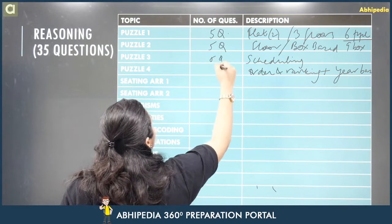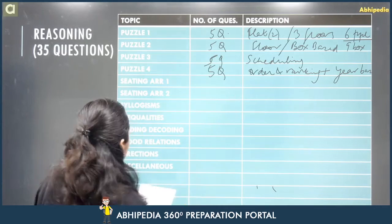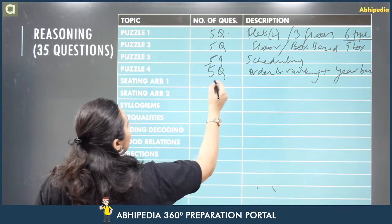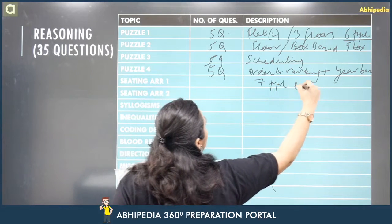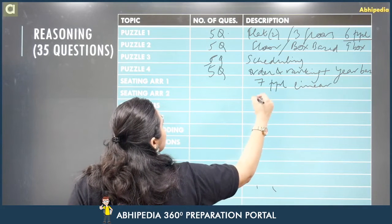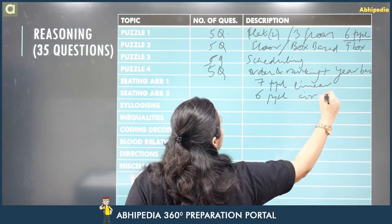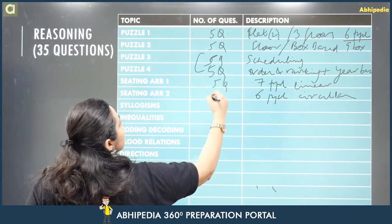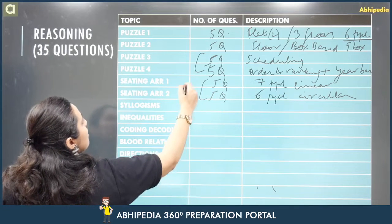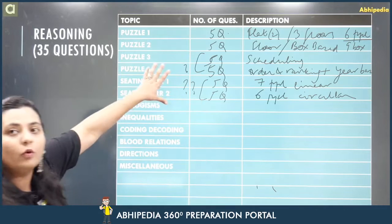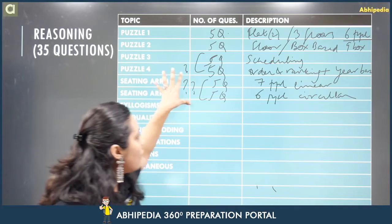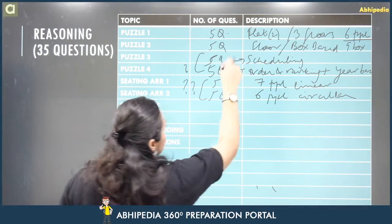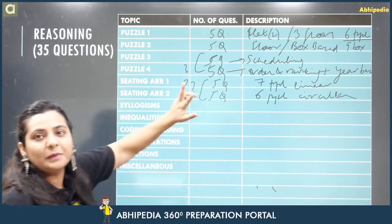For seating arrangement, there is some confusion. Some students said there was a seven-people linear arrangement, while one student mentioned a six-people circular arrangement as well. There may be one fewer puzzle, or some puzzles have fewer questions. Kuch bachon ne bola char puzzles thi, kuch ne teen boli — please confirm and let us know what seating arrangements you saw.